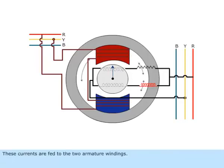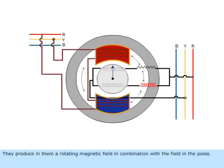These currents are fed to the two armature windings. They produce in them a rotating magnetic field in combination with the field in the poles.